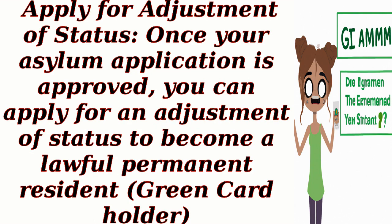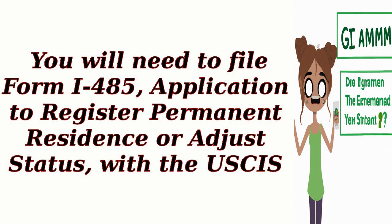Apply for adjustment of status. Once your asylum application is approved, you can apply for an adjustment of status to become a lawful permanent resident, or green card holder. You will need to file Form I-485, Application to Register Permanent Residence or Adjust Status, with the USCIS.